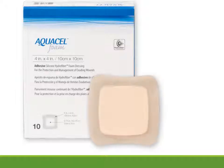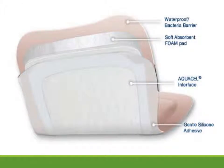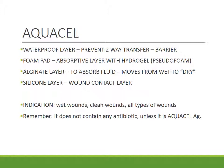Aquacill is a commercially available sandwich dressing with multiple materials. Observe the different layers: there is a waterproof layer, a soft absorbent foam pad, an Aquacill special inter-surface, and a silicone non-adhesive layer. The outermost layer is a waterproof layer which prevents two-way transfer — it's like a barrier so stuff from outside can't come inside and vice versa. The silicone layer is called non-adhesive because it doesn't adhere to the wound, but otherwise silicone sticks nicely to normal skin.